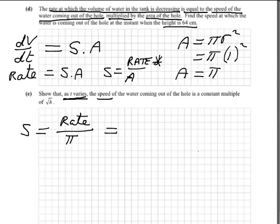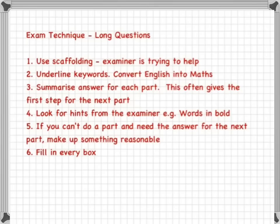That last part wasn't that bad if you had your work organised from the previous parts — it was just using the previous equation for speed. Now to summarise all the techniques we learned: use scaffolding — the examiner is breaking things down into chunks, so use those pieces one at a time. Underline keywords frequently. Draw the question. Use the technique of converting English to maths. Summarise the answer for each part.